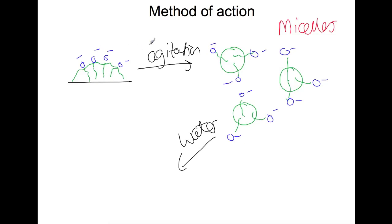Soaps are formed with the carboxylate head, and if they're used in places where you have hard water — so you've got calcium and magnesium ions present — then you can get a scum forming. Where that is the case, detergents tend to be used, and they have sulfate heads instead, which stop the production of scum.